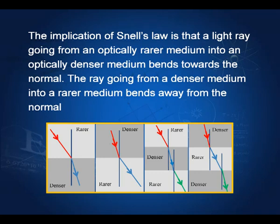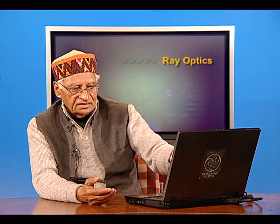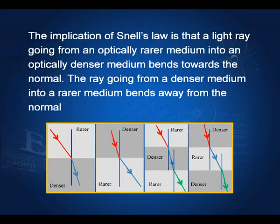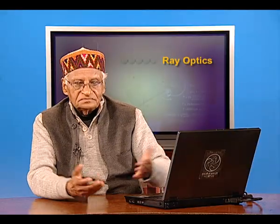The implication of Snell's law is that a light ray going from an optically rarer medium into an optically denser medium bends towards the normal, and a ray going from a denser medium into a rarer medium bends away from the normal. If you have three slabs with a denser medium in between, the ray first bends towards the normal and then away. If the rarer medium is in between two denser media, the ray first bends away from the normal and then back towards it.